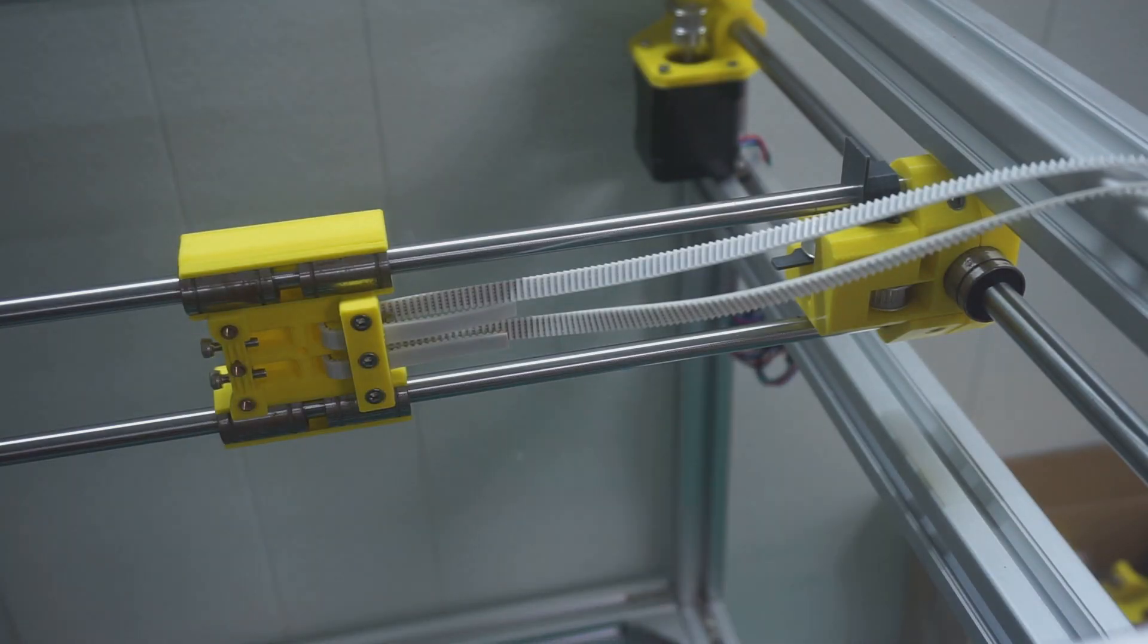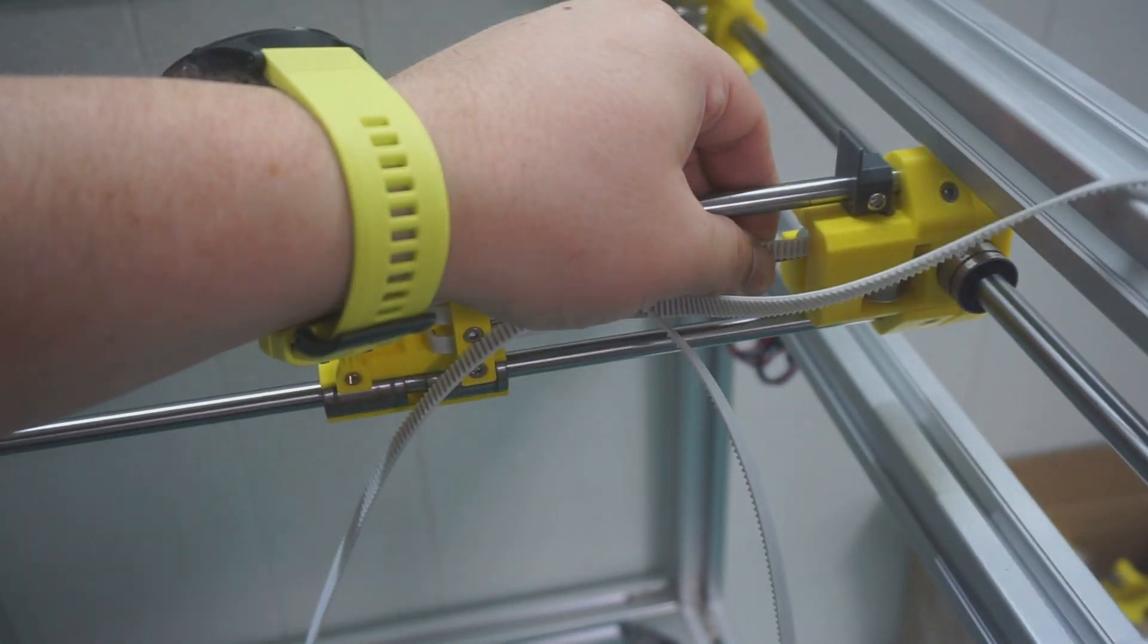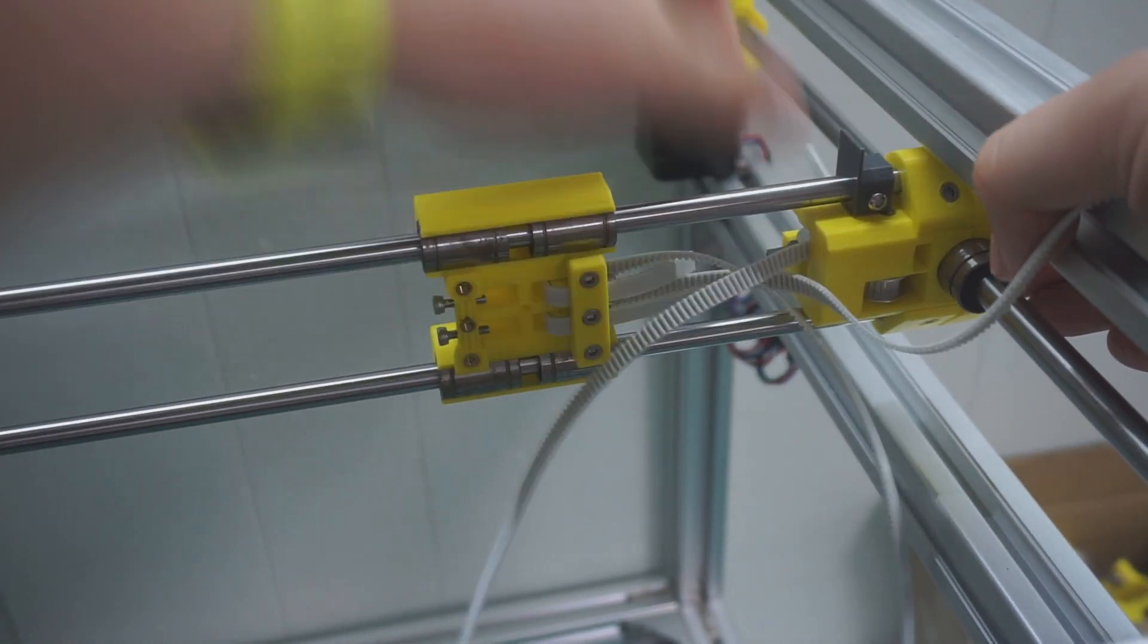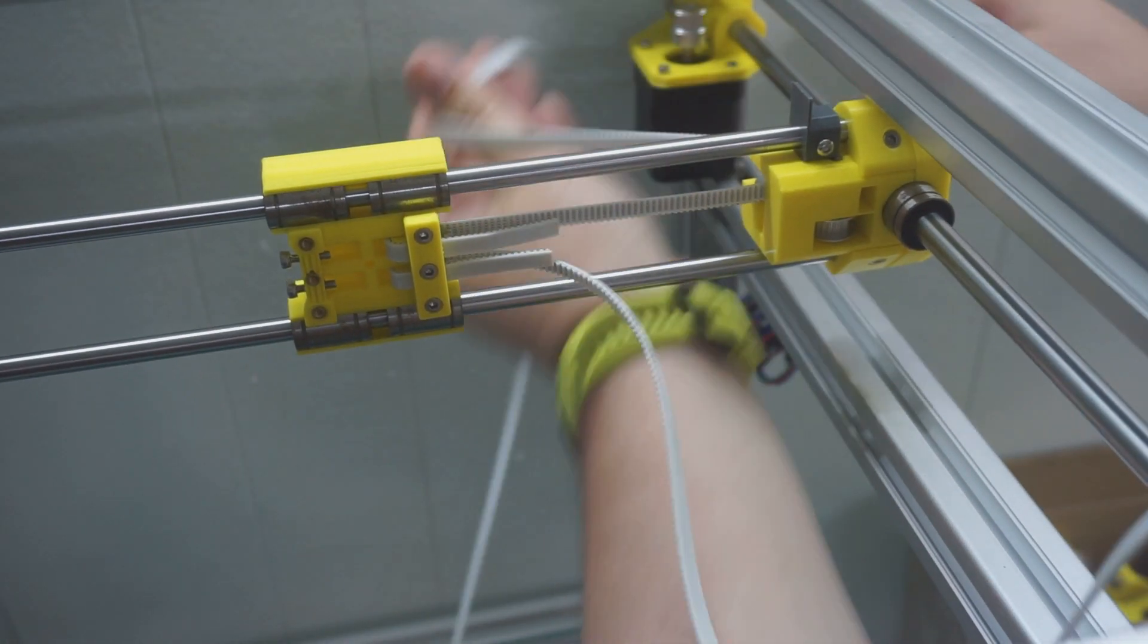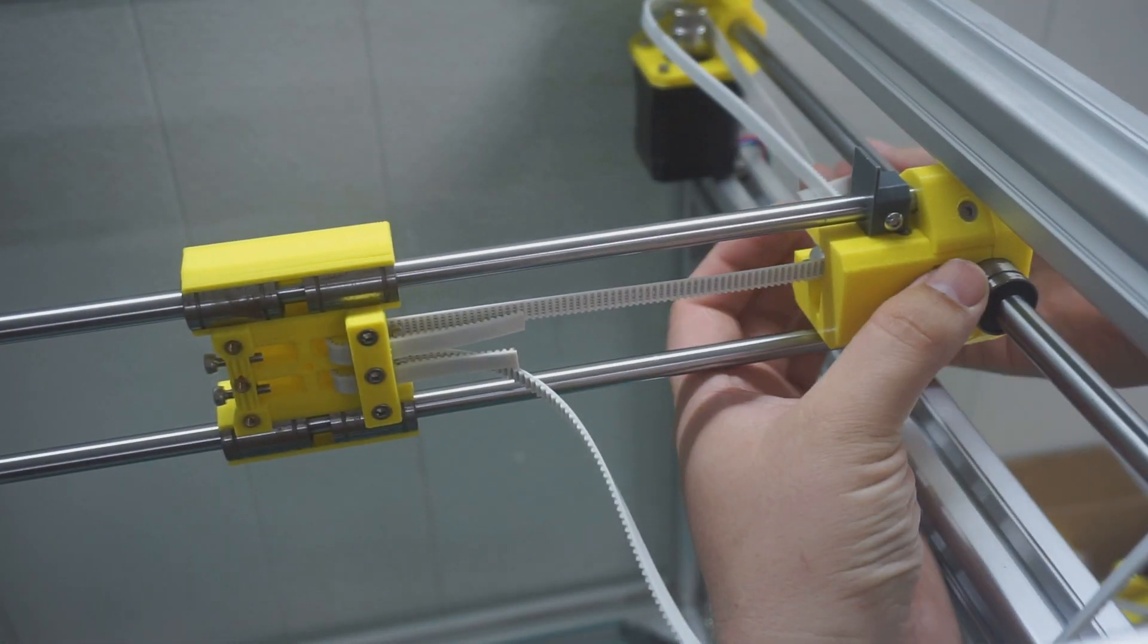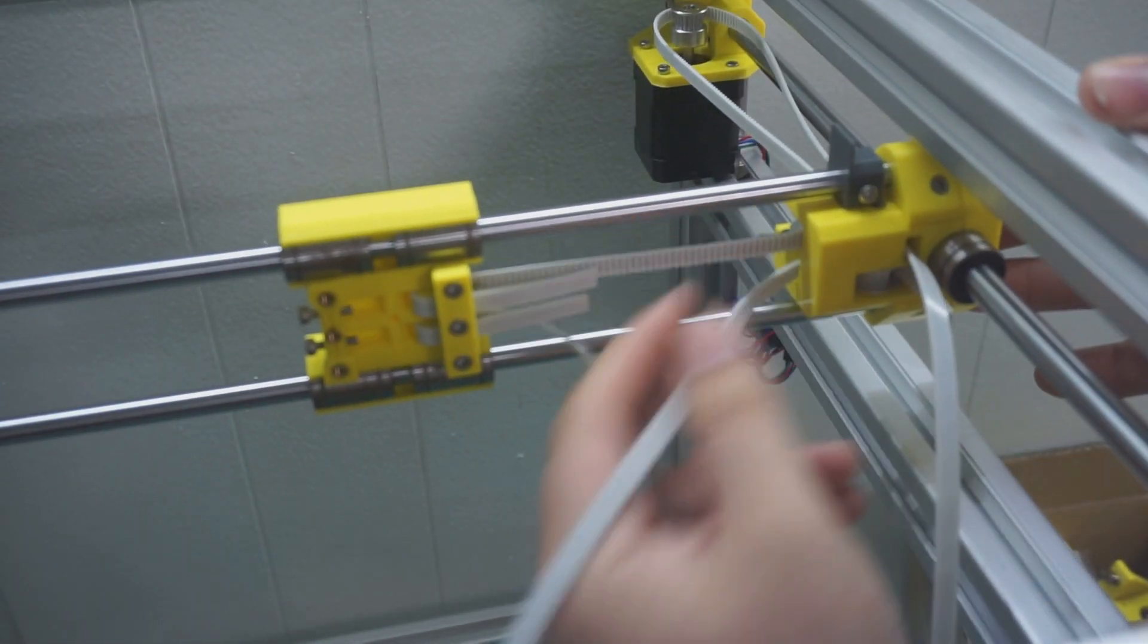First we want to run the belts through the right hand XY idler bracket. The top side we want the smooth side of the belt to run past the smooth pulley and the bottom side we want to run with the toothed side of the belt against the toothed pulley.